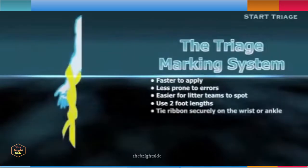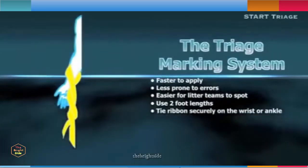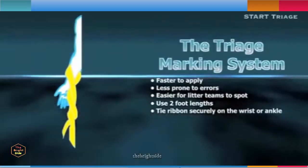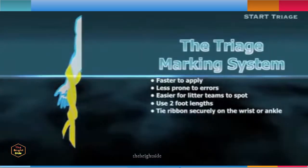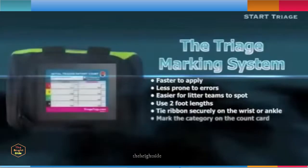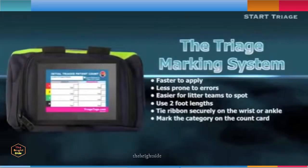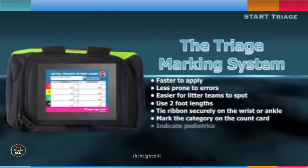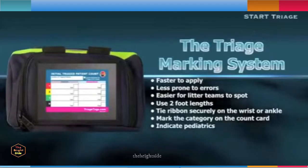Using a standard knot, comfortably tie the ribbon section around one of the patient's uninjured extremities. After securing the ribbon to the patient, utilize the count card on the ribbon dispenser to indicate the acuity category and whether the patient was an adult or a pediatric.